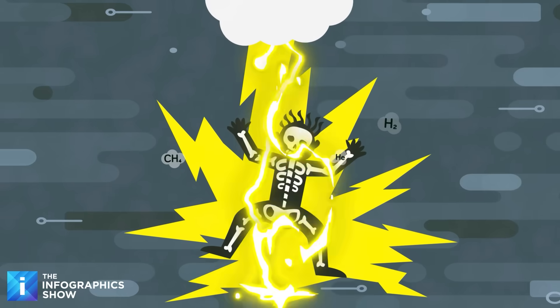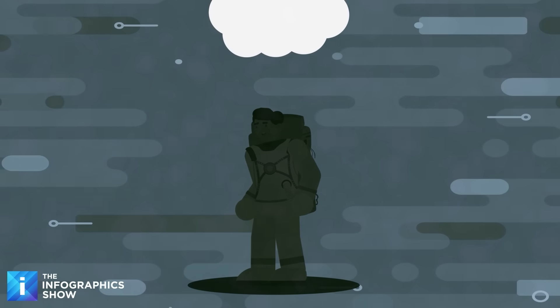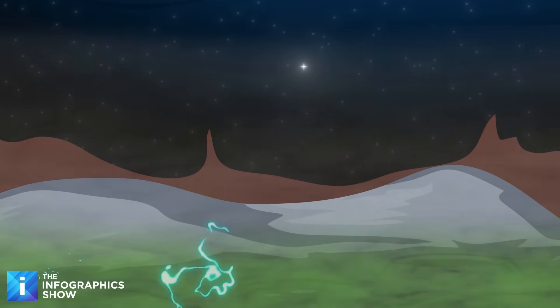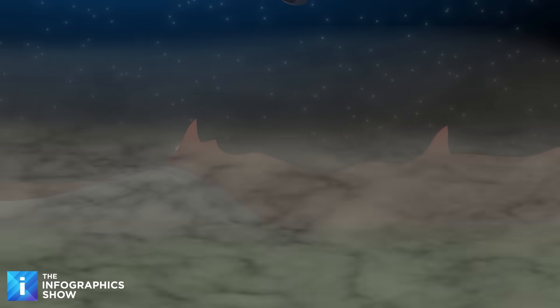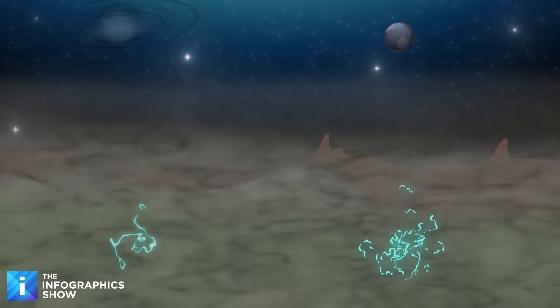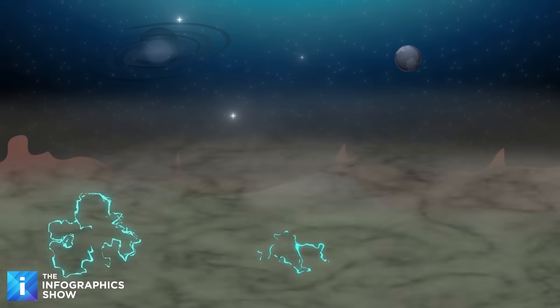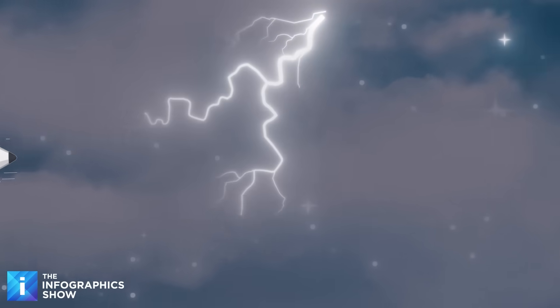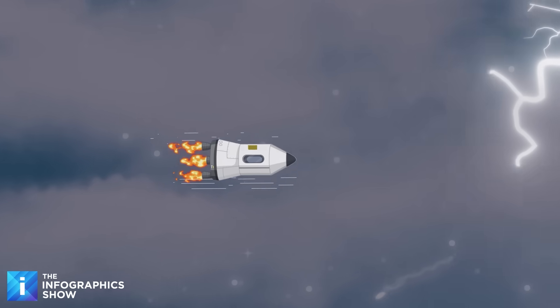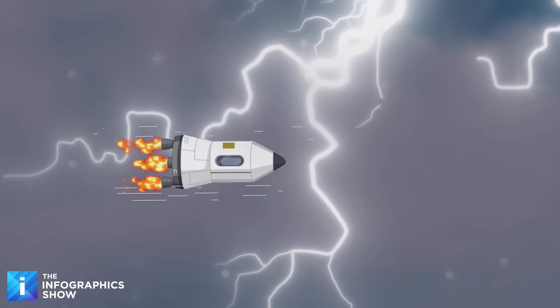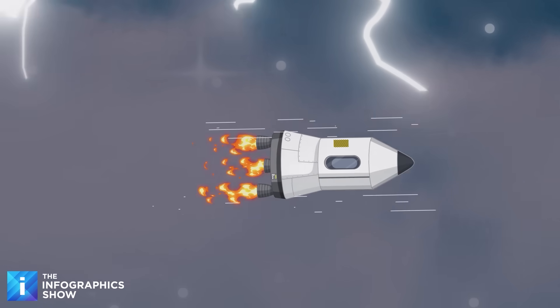But most likely, you'd be killed by lightning before that even happened. Jupiter's lightning activity is closely tied to its atmospheric dynamics, with powerful updrafts and strong winds contributing to the formation of electrical storms. These thunderstorms can be wider than the Earth, creating incredibly powerful lightning. When a bolt inevitably hits your descending spaceship, everything inside, including you, would be fried in milliseconds.